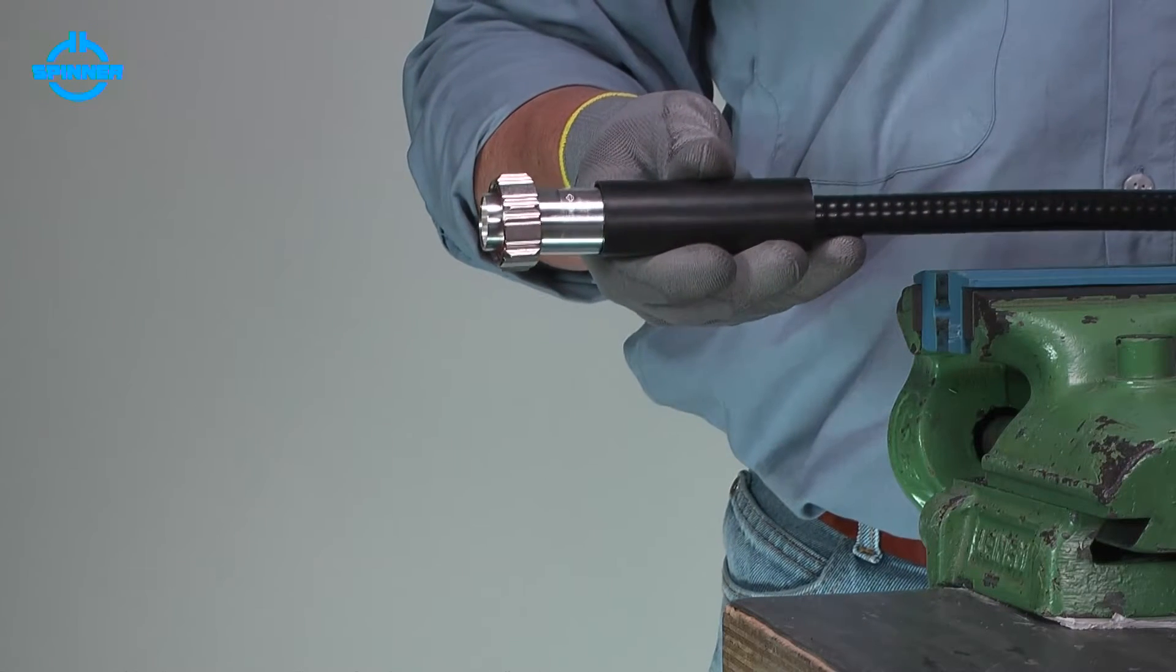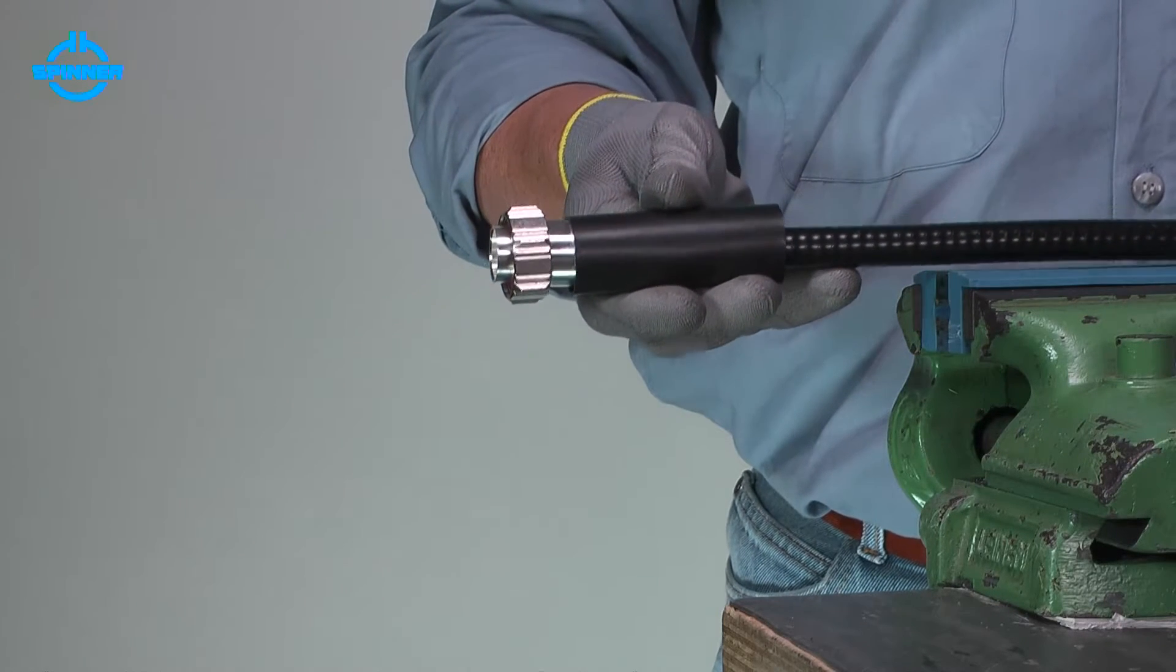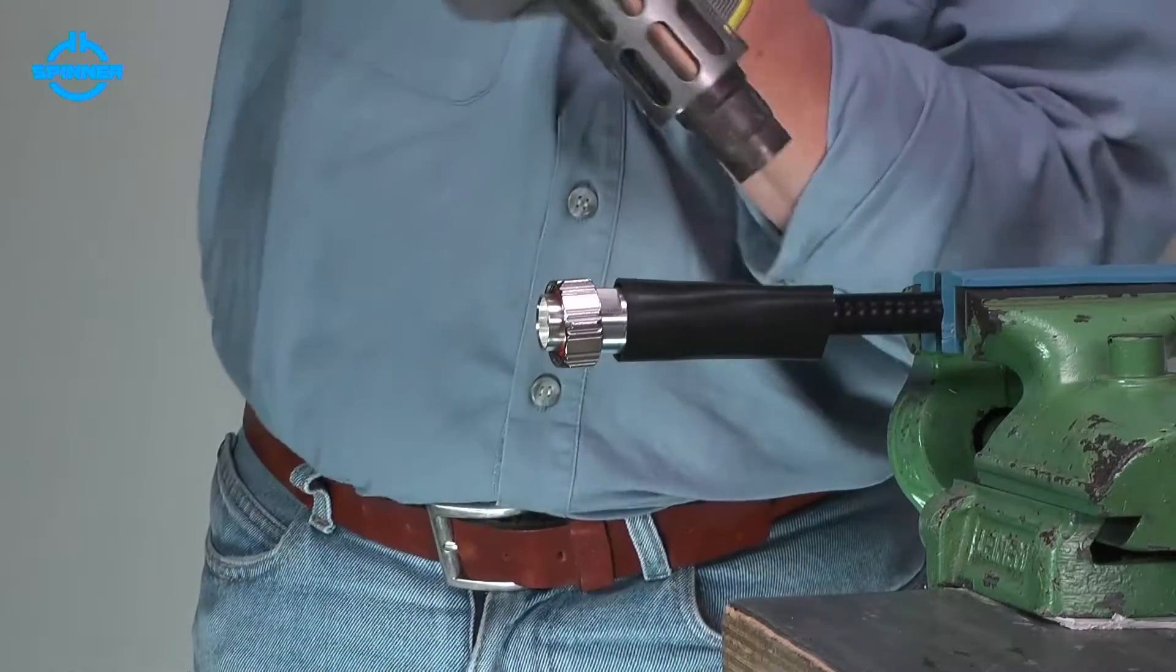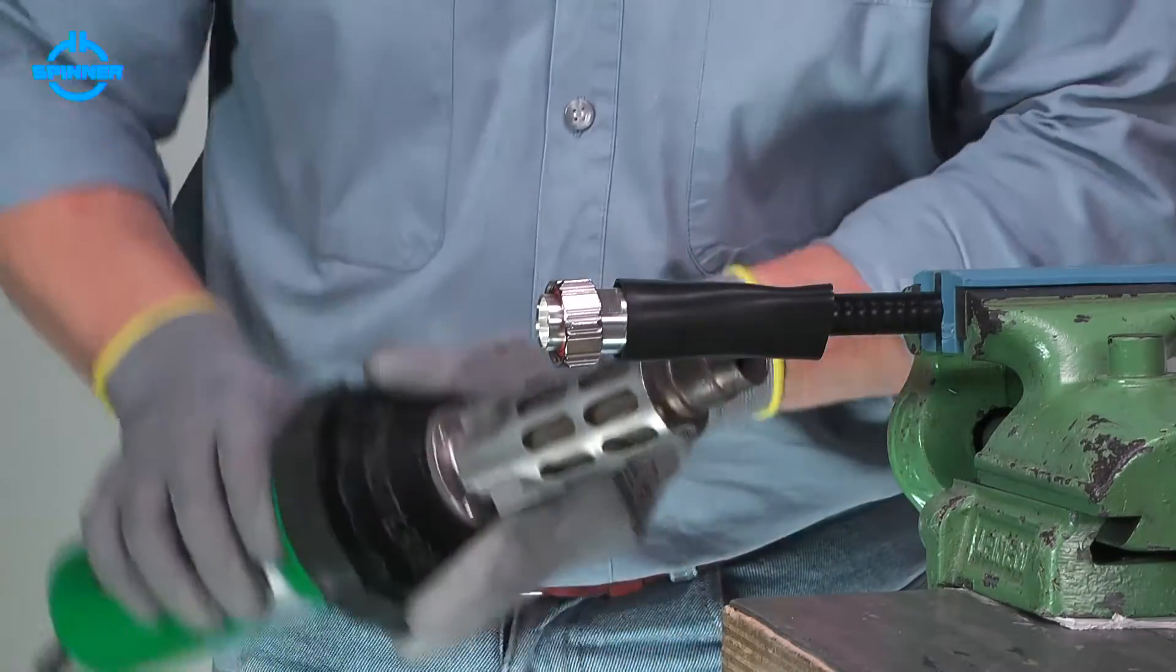When the connector is installed, position the heat shrink tube over the connector. Then, shrink it using a heat gun.